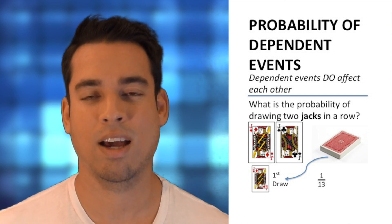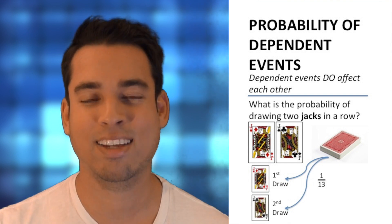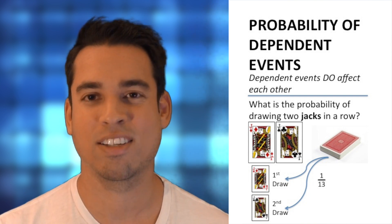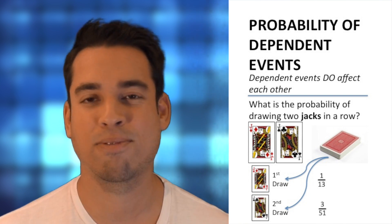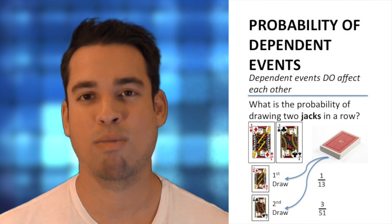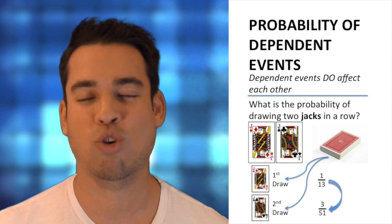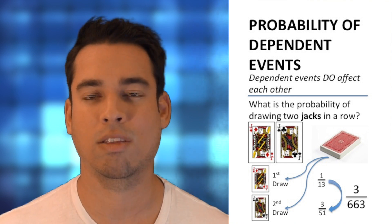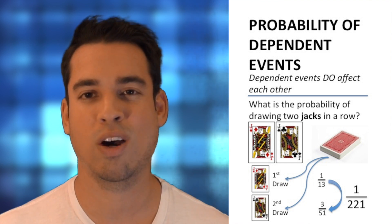For the second draw, we now only have 51 cards left and only three jacks remaining, so the probability is three out of 51. Just like with independent events, we multiply these together to get the probability of drawing two jacks in a row, giving us three over 663, which reduces to one over 221.